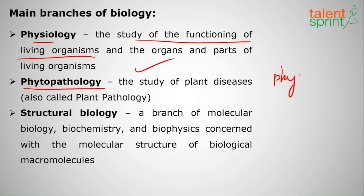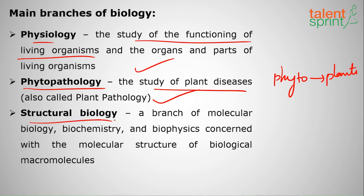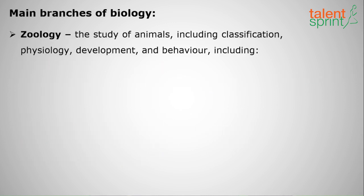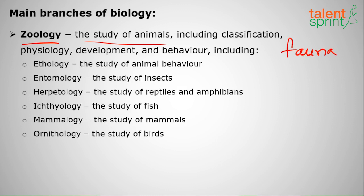Next is phytopathology — 'phyto' means plants — so it is the study of plant diseases, also called plant pathology. Next is structural biology: when we integrate biology, biochemistry, and biophysics, it is called structural biology. Next is zoology: the study of animals. Plants are called flora and animals are called fauna — zoology studies how animals behave.